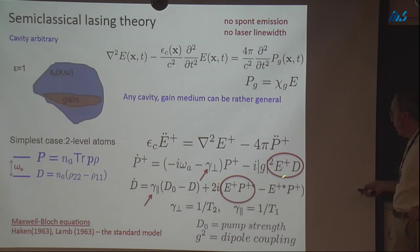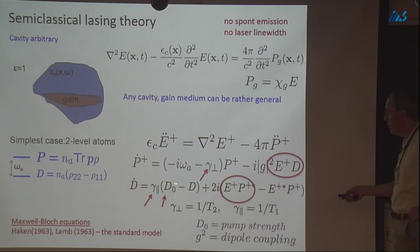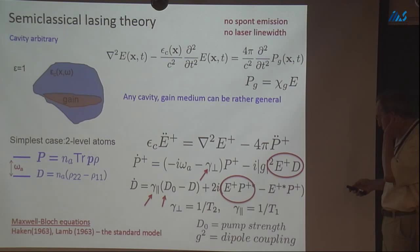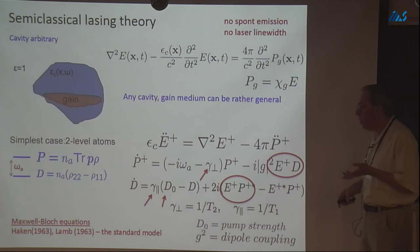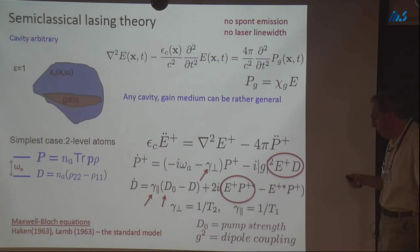The damping coefficients are the dephasing of the polarization and the relaxation of the inversion due to the environment. The nonlinearity makes this equation nonlinear, and the drive D₀ gives a steady state — D₀ is the inversion you would have in the absence of any electric field. This is the standard model introduced by Haken and Lamb in 1963. Everybody agrees these equations, or their generalization to more complicated gain media, describe lasers except for quantum fluctuations. The problem is they're coupled nonlinear equations in space and time — essentially impossible to solve analytically and hard even numerically.